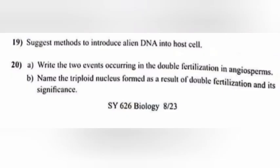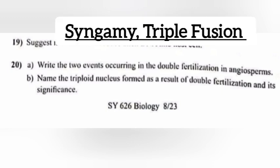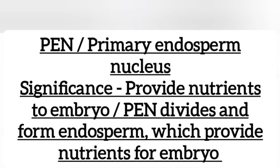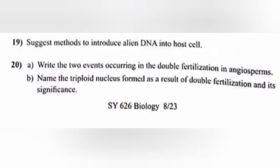Question 20 (a): Write the two events occurring in double fertilization in angiosperms. Answer: Syngamy and triple fusion. (b): Name the triploid nucleus formed as a result of double fertilization and its significance. Answer: PEN (Primary Endosperm Nucleus). Significance: PEN divides and forms the endosperm, which provides nutrients to the embryo.